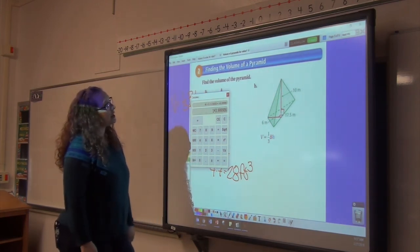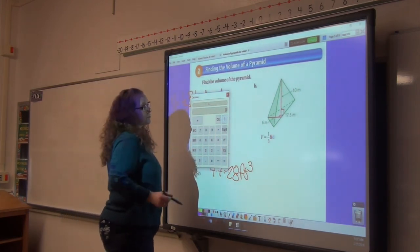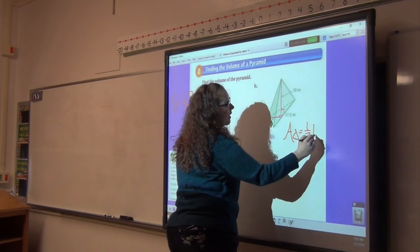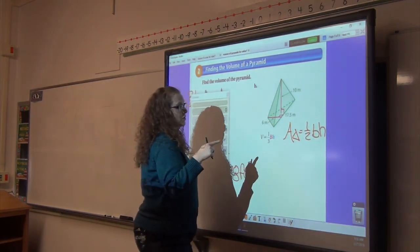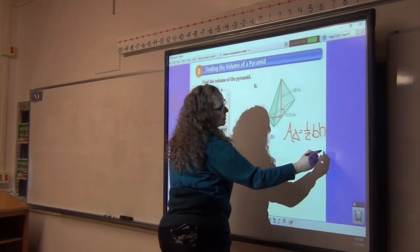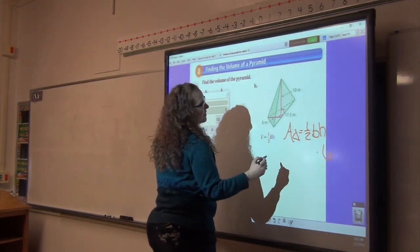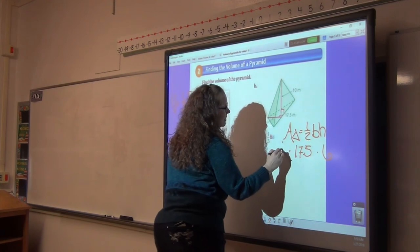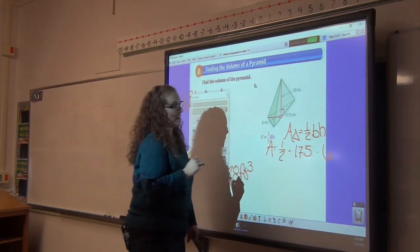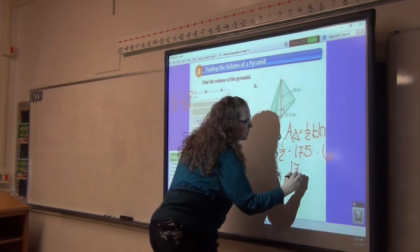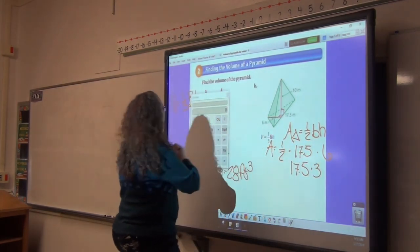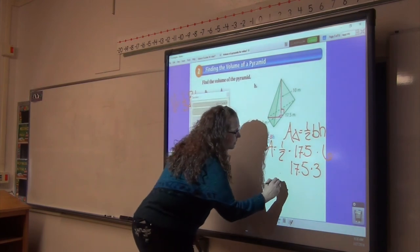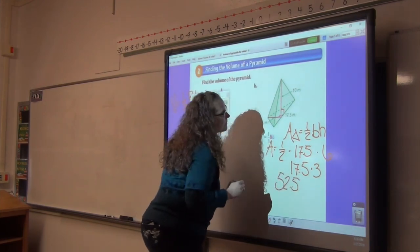This pyramid is a triangular pyramid. The area of our base is going to be the area of a triangle, which is one half base of the triangle times the height of the triangle. The height of the triangle is 6, the base of the triangle is 17.5. And we are multiplying that by one half to get the area of our base. So half of 6 is 3, so we've got 17.5 times 3, and that is 52.5.